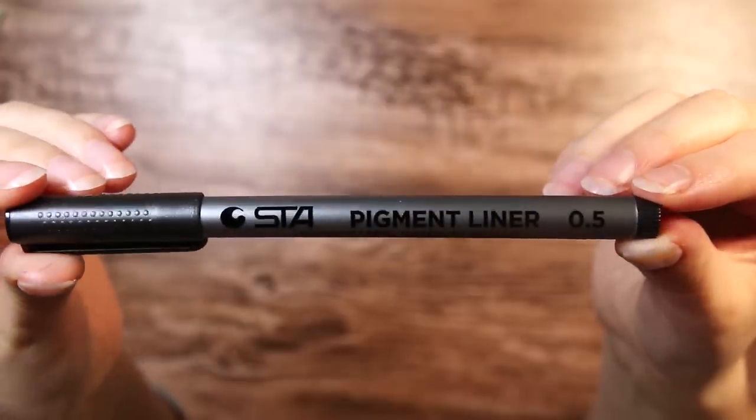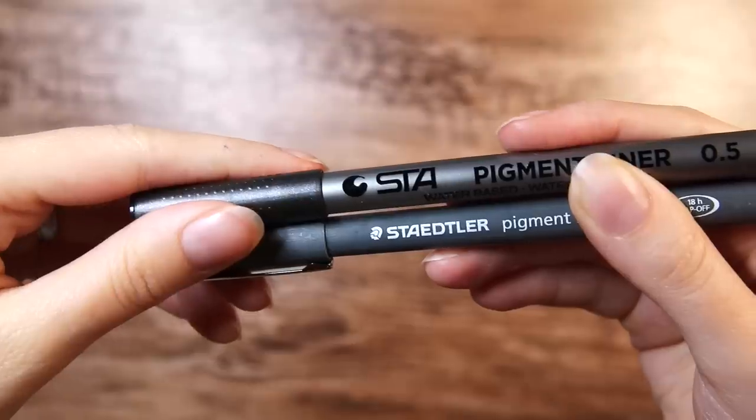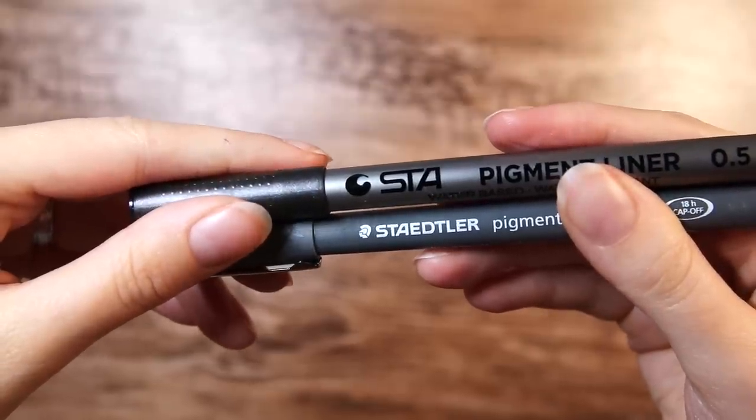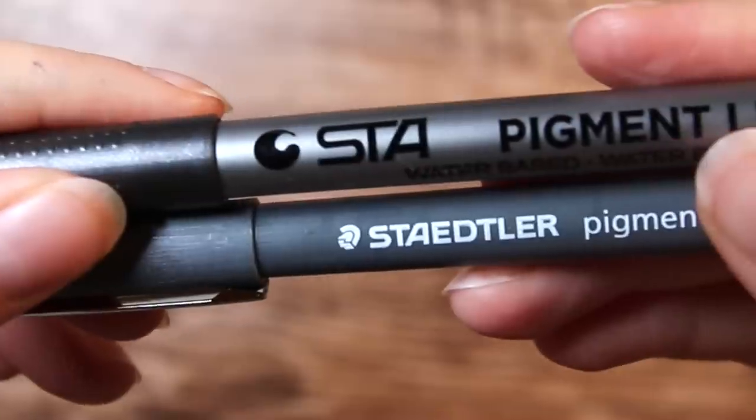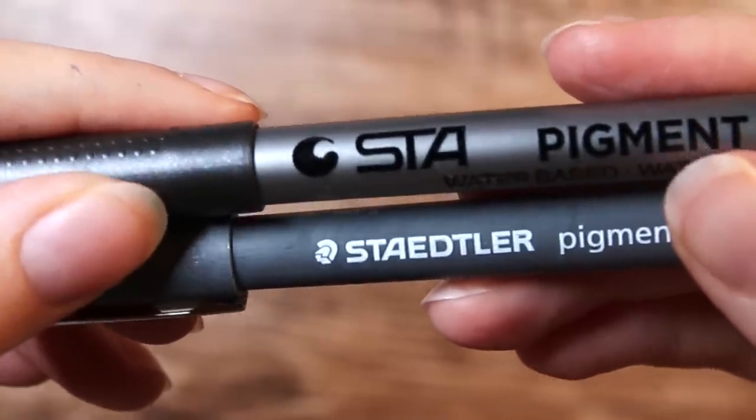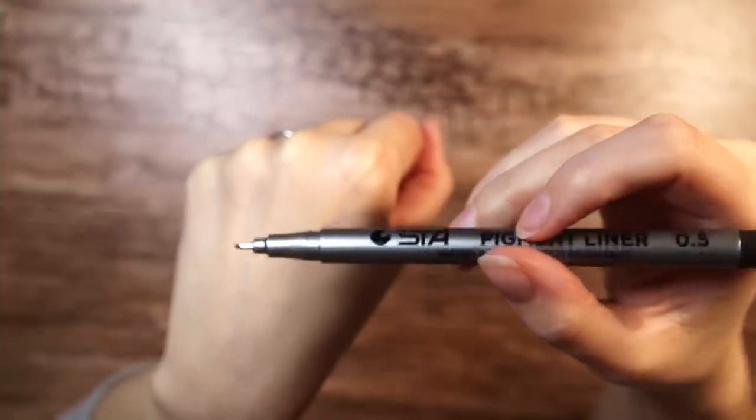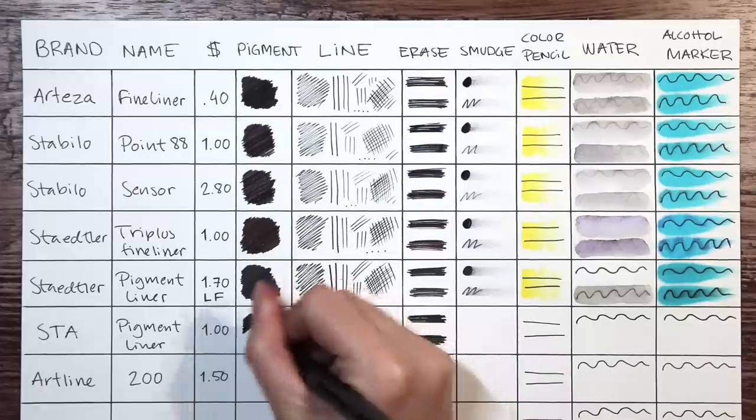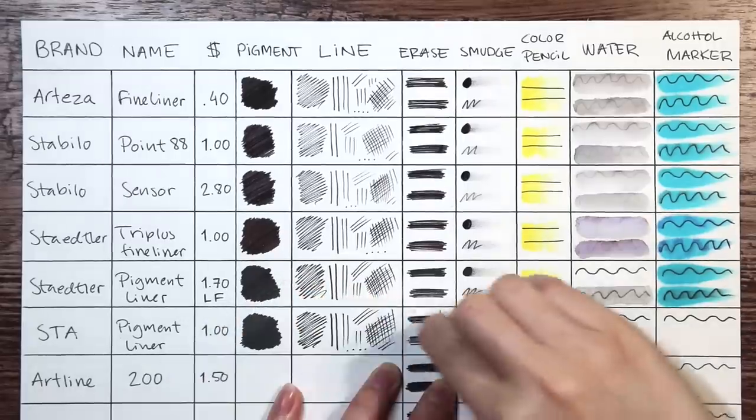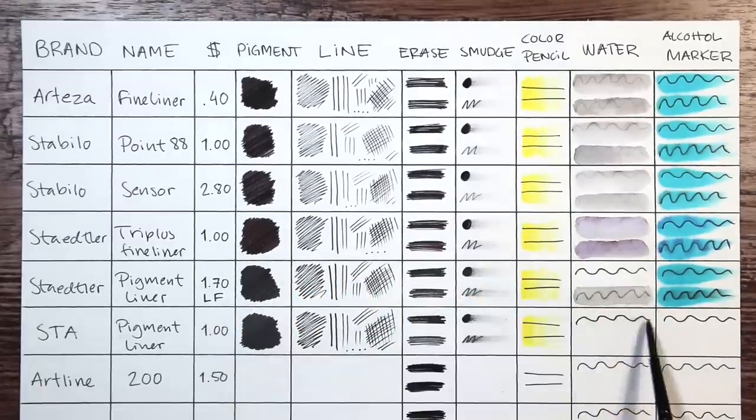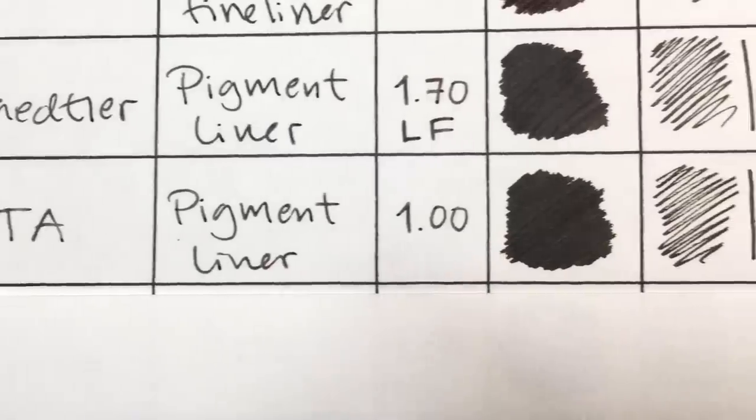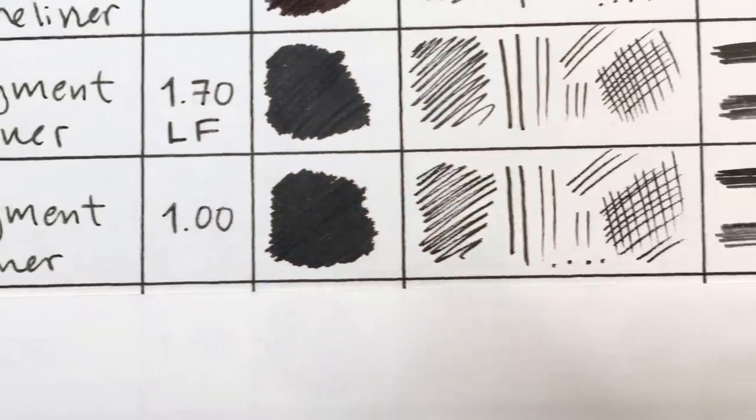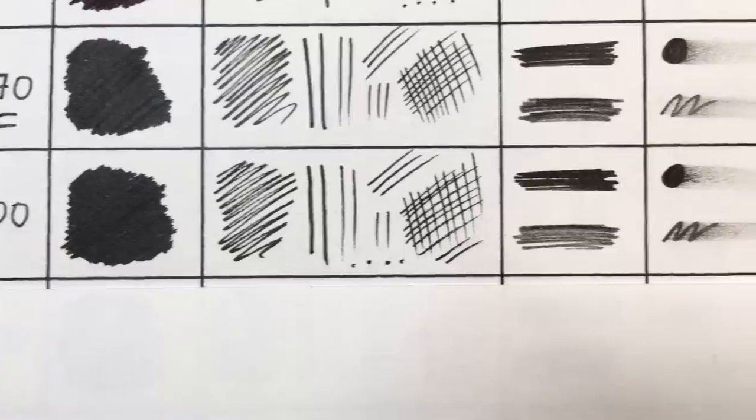Next we have the STA pigment liner. This one I believe might be a cheaper dupe of the Stedler pigment liner. The logos look very similar and it is even called the same thing, pigment liner. The STA one is only $1.00. It is however performing exactly the same as the Stedler pigment liner. The only difference is the price and that this one is not lightfast which is probably the thing that is affecting the price.